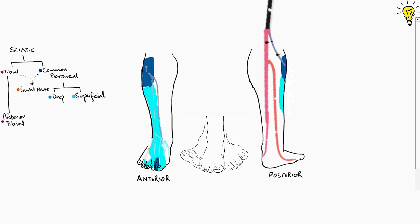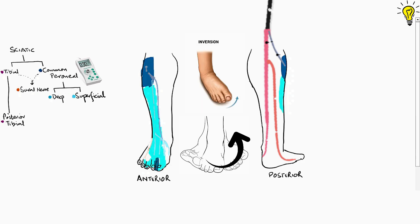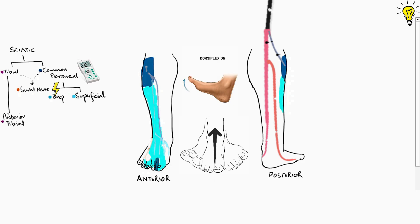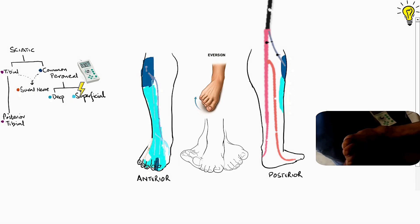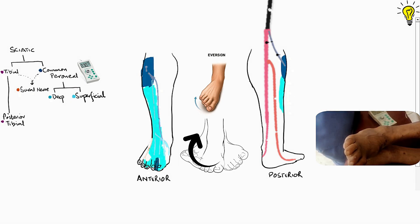Stimulating the deep peroneal nerve results in two movements: number one, inversion, and number two, dorsiflexion. You can see the sky-blue-colored superficial peroneal nerve distribution — stimulating this nerve will cause eversion of the foot.